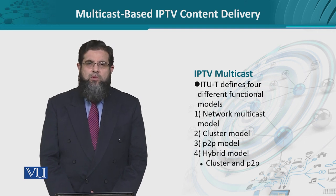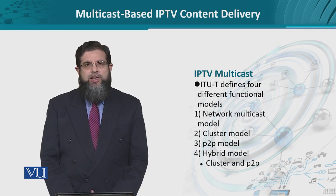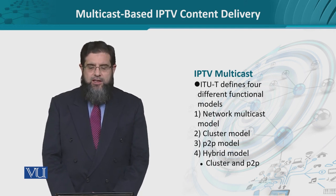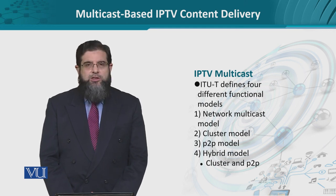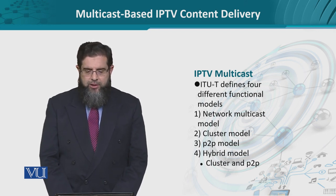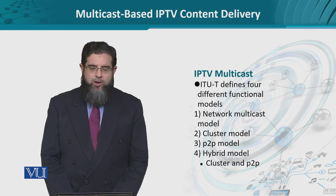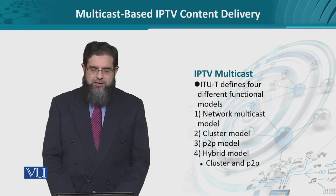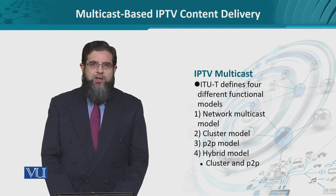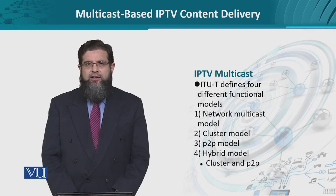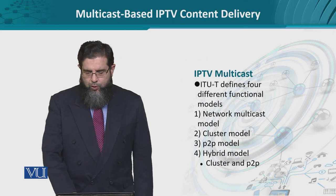The four different models are: multicasting at the network layer, which is the network multicast model; the cluster model; and the peer-to-peer model. In terms of complexity, the peer-to-peer model precedes the cluster model because the cluster model is a more robust mechanism in which the network service provider takes more responsibility. Then we can combine the cluster and the peer-to-peer model to realize the fourth type.